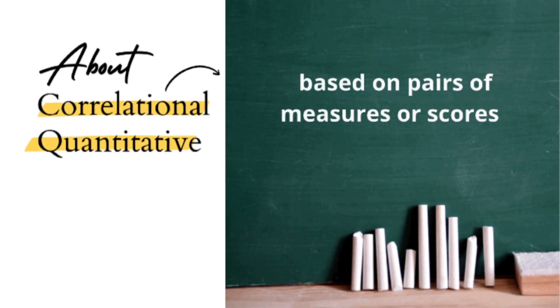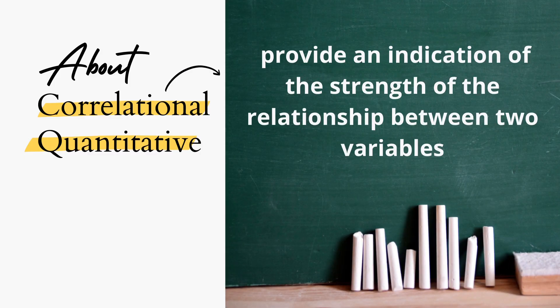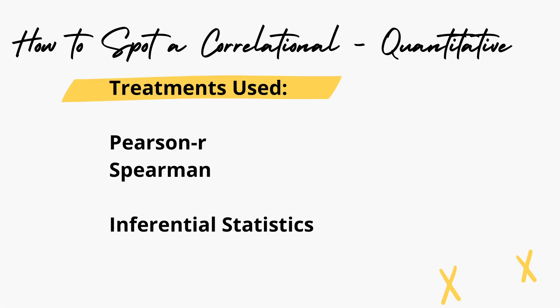The fourth type is correlational quantitative research. It is based on pairs of measures or scores and provides an indication of the strength of the relationship between two or more variables. An example research question is: Is there a significant relationship between the frequency of playing Mobile Legends and academic performance among senior high school students? Take note of the term 'significant relationship' — this is the basic and main research question for a correlational quantitative study. As to the treatment, correlational studies use inferential statistics such as Pearson R and Spearman.